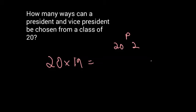So you just work out twenty times nineteen. So let's work that out: twenty times nineteen. Nine times zero is zero, nine times two is eighteen. Zero, zero, two. Three hundred and eighty. So there would be 380 different possibilities for picking the president and vice president.